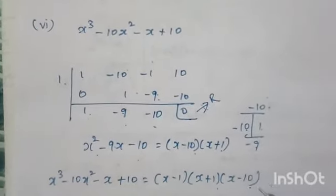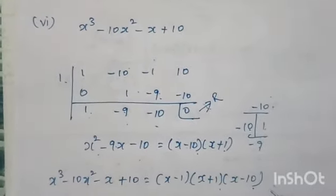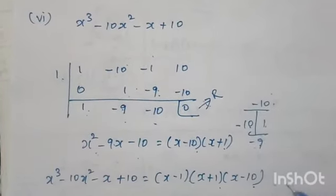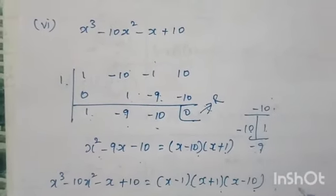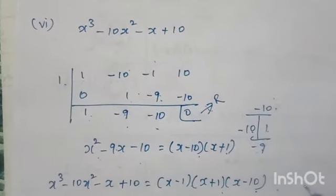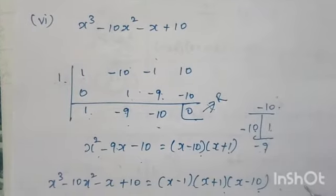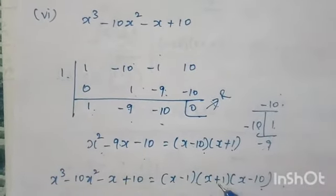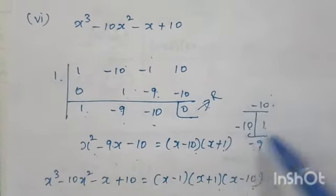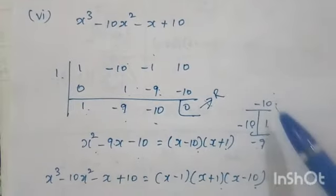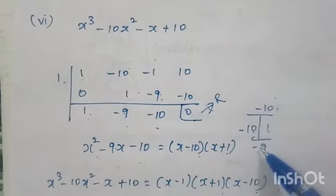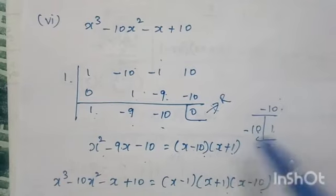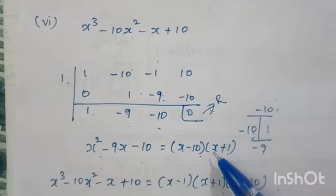In the previous exercise on synthetic division, the factor was given and you had to find the remainder. But in this exercise we need to find the factors ourselves, so we use the factor method — also called the trial factor or t-factor method — to find the factors before applying synthetic division.